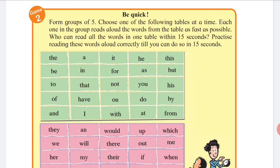درسی کتاب کے صفحہ چار پر دی گئی جدولوں میں سے ایک وقت میں ایک جدول منتخب کیجئے۔ گروہ میں سے ہر طالب علم اس جدول کے الفاظ جتنی تیز رفتاری سے ممکن ہو بلند آواز سے پڑھے۔